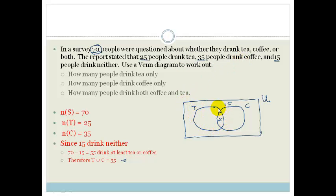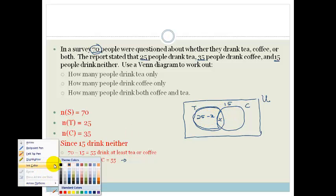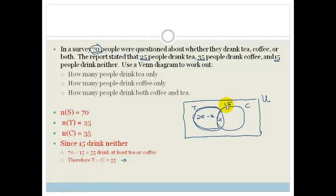So therefore, this bit here is going to be 25 minus x. And let me choose another color. I'm being a bit pedantic about this, but that's fine. This bit here is 35 minus x.